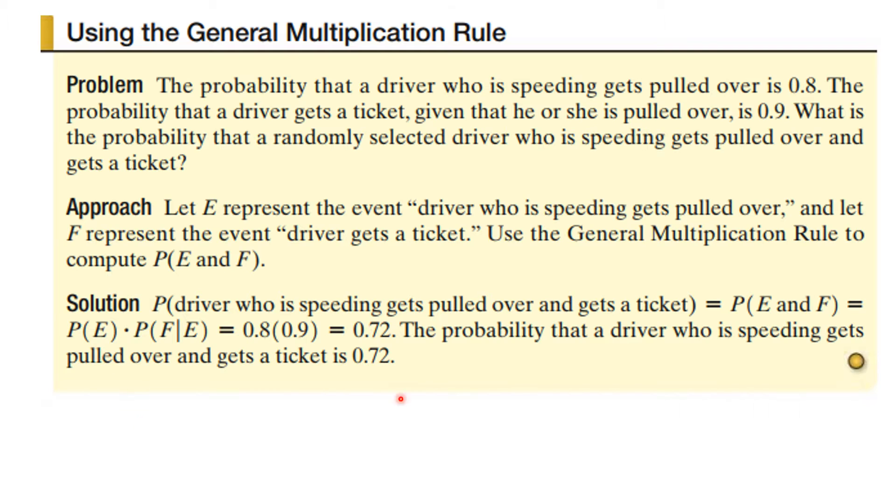So we learned that the probability of E and F is the probability of E times the probability of F given E. So that is going to be 0.8 times 0.9 or 0.72.